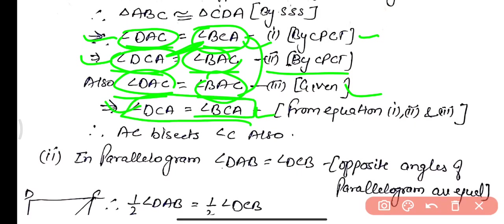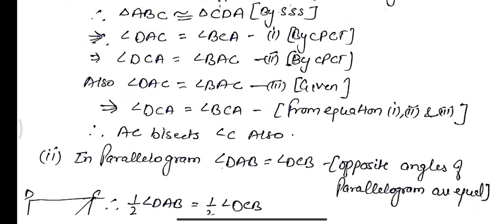From equations 1, 2, and 3, DCA equals BCA. So we can say AC bisects angle C also. Thus the diagonal AC bisects angle A as well as angle C.